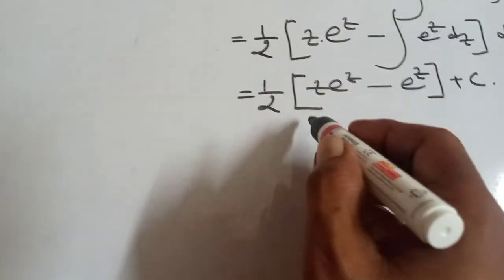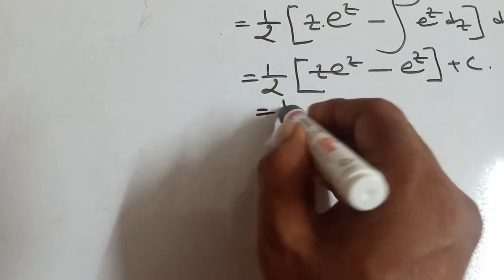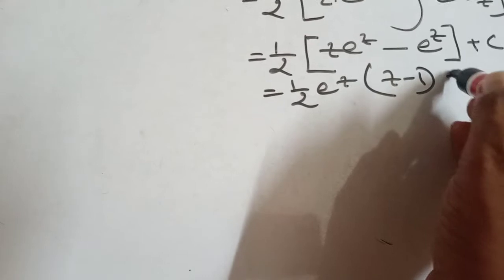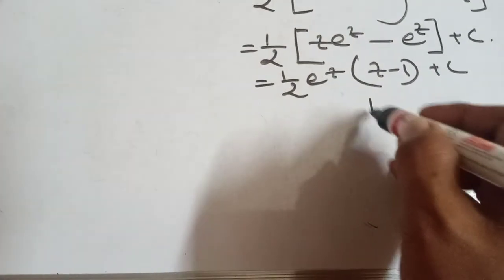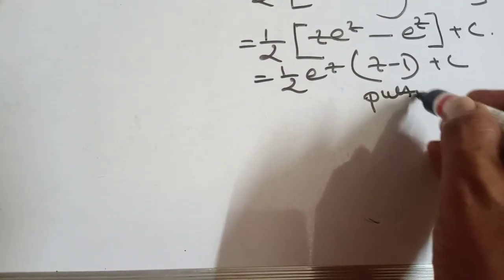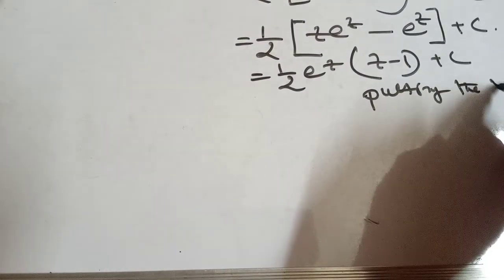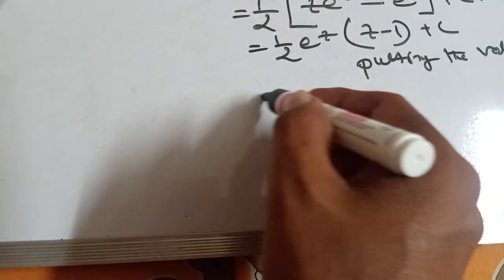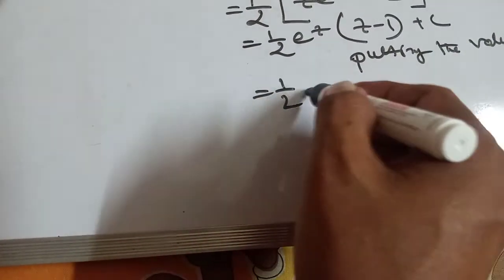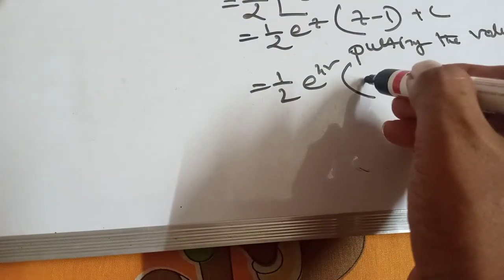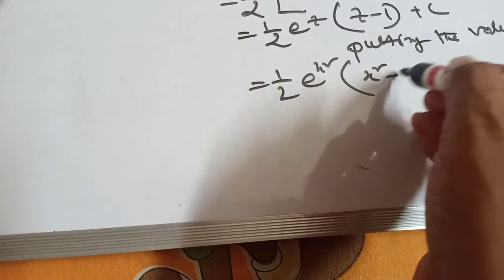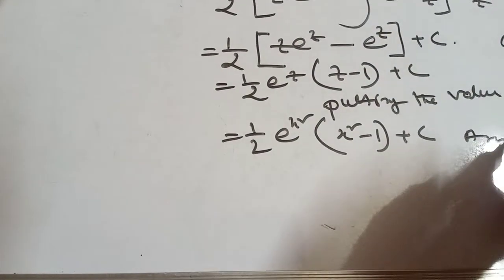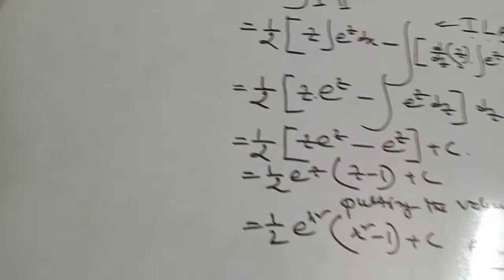Now, putting the value: 1 by 2, e to the power z common, z minus 1 plus c. Now putting the value of z back: 1 by 2, e to the power x square, bracket x square minus 1 plus c. This is the answer.